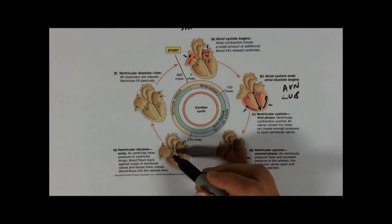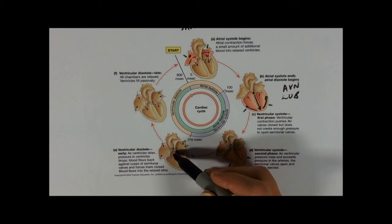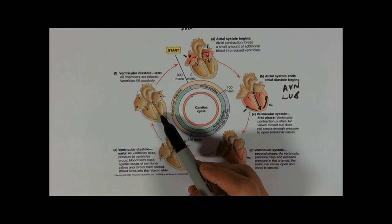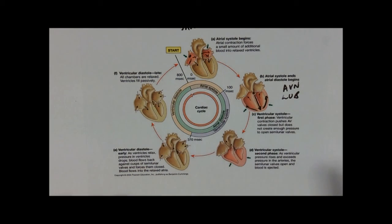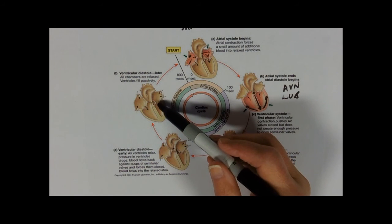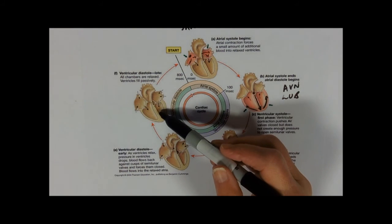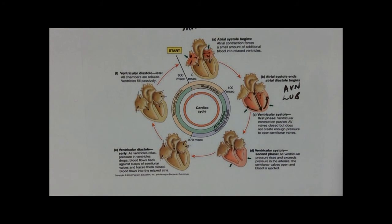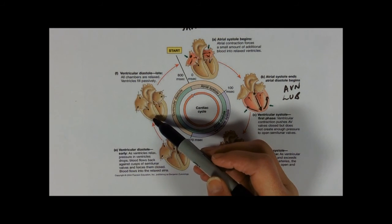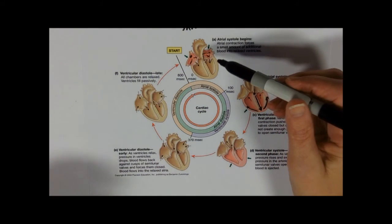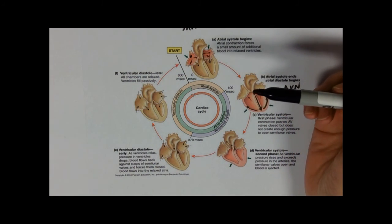So 'lub' is the AV valves closing and 'dub' is the semilunar valves closing. Again, all of the valves are shut — ventricular pressure is still higher than in the atria but now below that of the arteries. As the ventricles continue to relax, eventually the pressure falls below that of the filling atria. Atrial pressure is going up as blood flows into it; it rises above ventricular pressure and forces open the atrioventricular valves — bicuspid and tricuspid — and blood flows directly down into the ventricles, which are much bigger than the atria, filling them up until they're almost full.